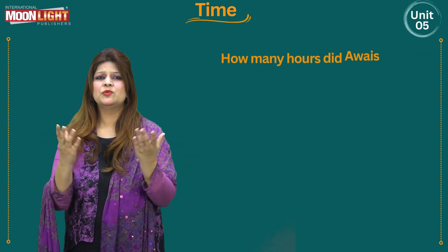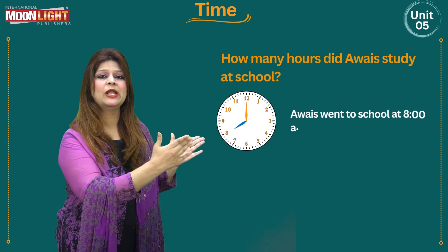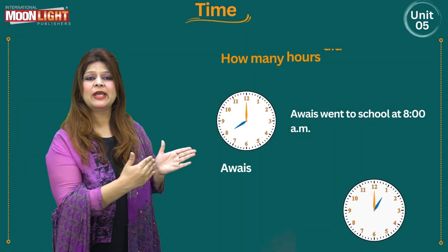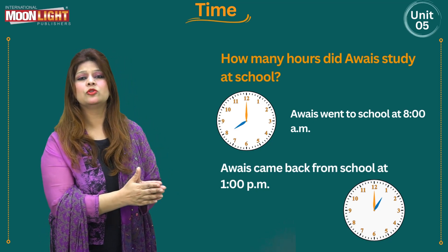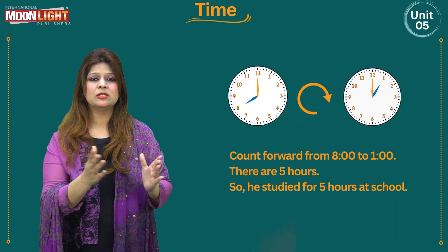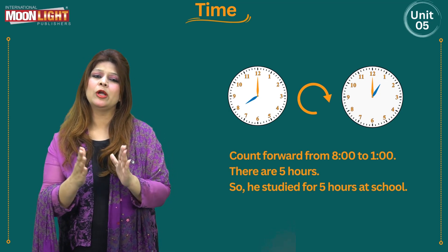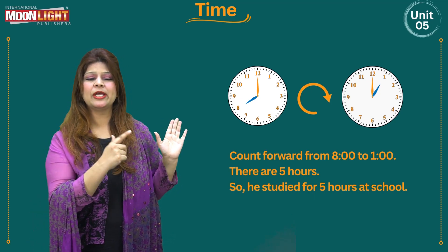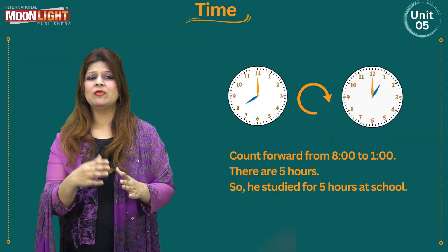This is a simple and easy question. From the statement, Awais went to school at 8 AM — here is the clock showing you the time 8 AM. Awais came back from school at 1 PM — this clock is showing you 1 o'clock. Since this is morning time, we move forward and count forward from 8 to 1 on the clock.